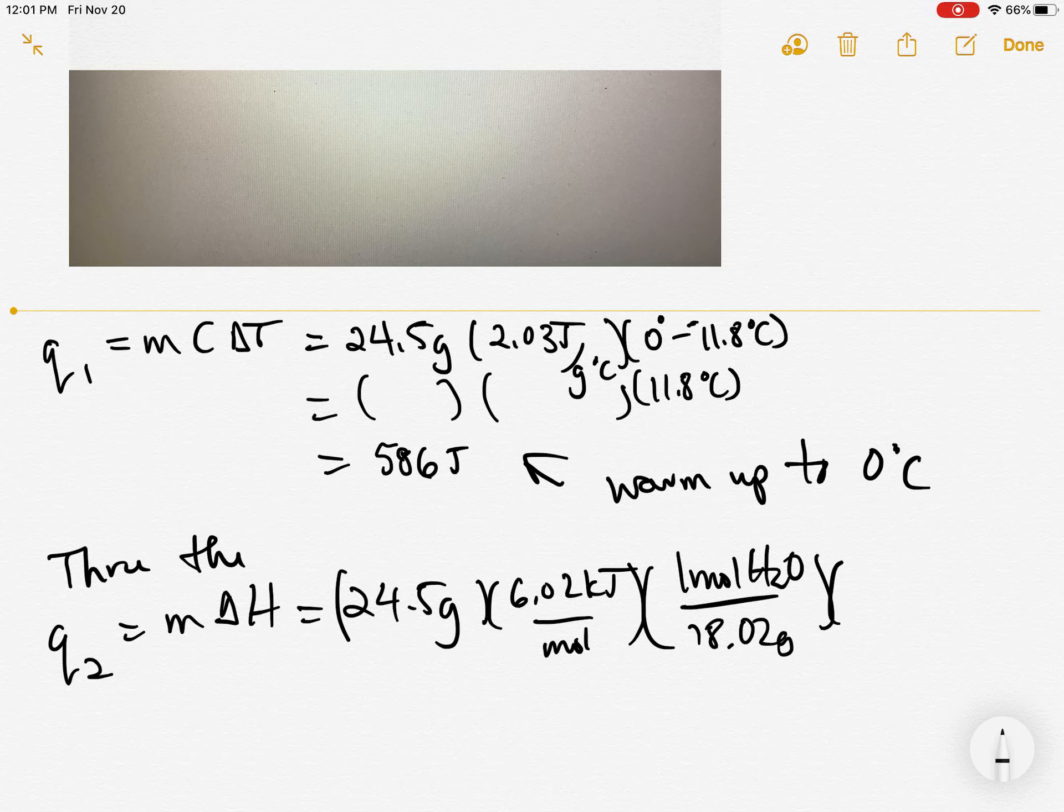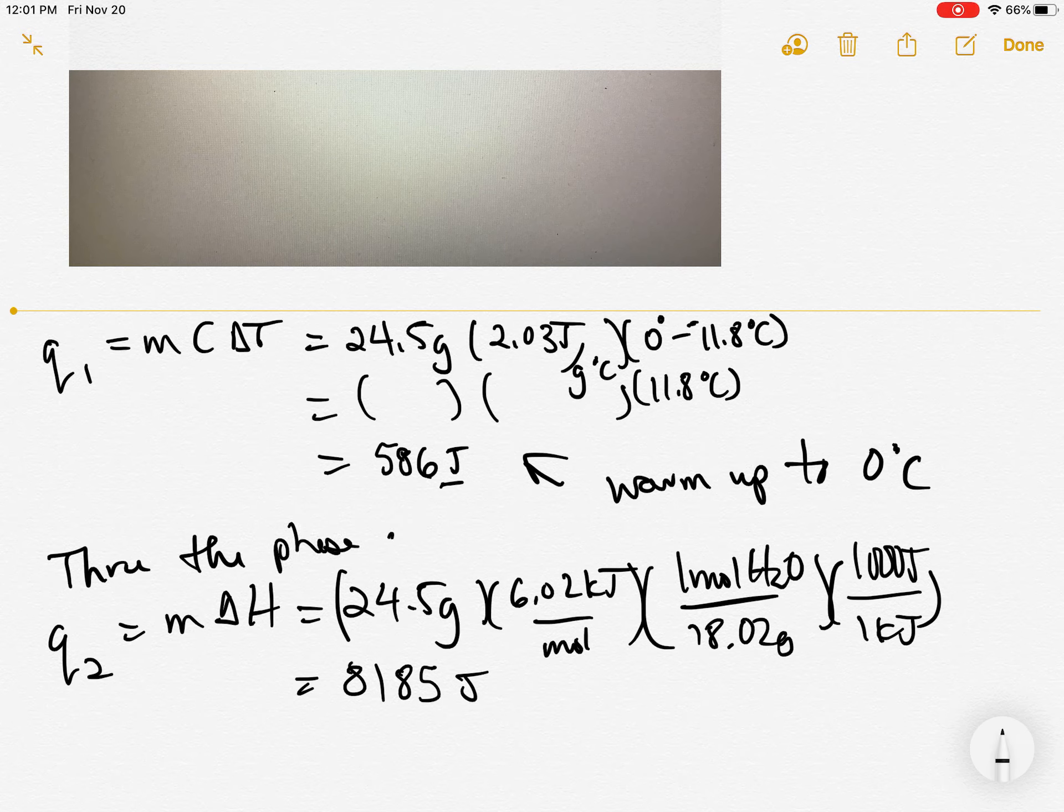And since we're dealing with joules, let's go ahead and convert the kilojoules into joules. When I do that, I get a calculation of 8185 joules of energy that it takes to go through the phase change.